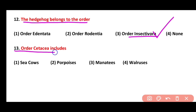Question 13. Order Cetacea includes which animals? Sea cows, porpoises, manatees, or walruses. Correct answer is option 2. Order Cetacea includes porpoises, whales, and dolphins.